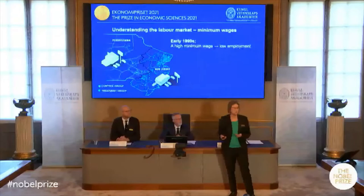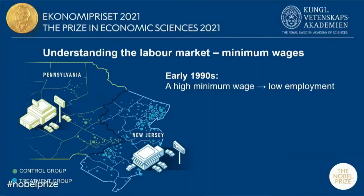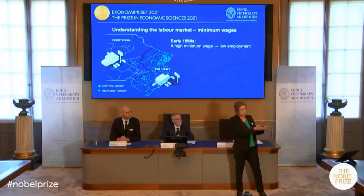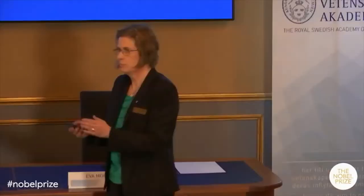So Card and Krueger, just as in a randomized experiment, needed a control group. They noted that in neighboring Pennsylvania there was no change in the minimum wage. Of course, the labor market could be quite different in Pennsylvania and New Jersey overall, but close to the border it is likely a common labor market, especially in the fast food sector. Hence, they compared the changes in employment in New Jersey with the changes in employment in eastern Pennsylvania.